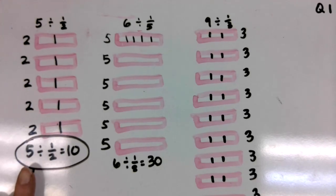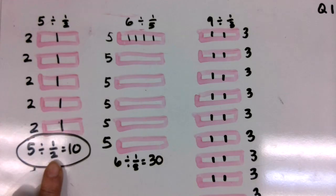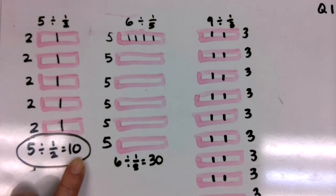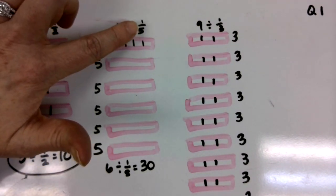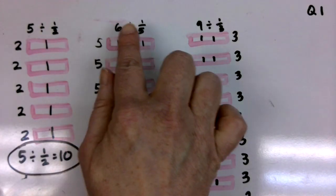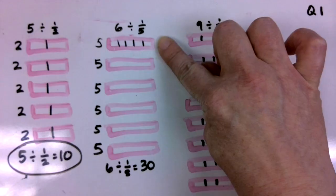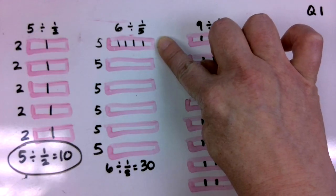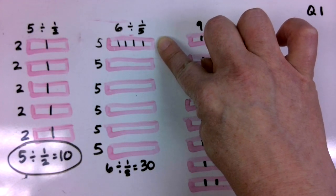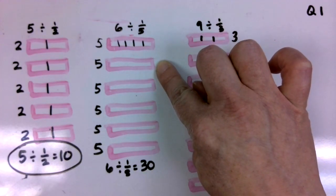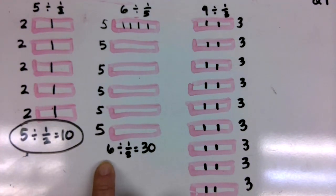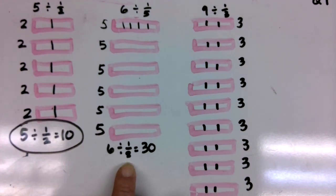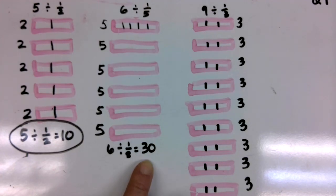So we know that our five chocolate bars, if they were broken into one-half portions, would give us 10 total portions. Boys and girls, we can use that same logic for breaking the six wholes into one-fifth pieces. If I break six wholes into one-fifth pieces, my first chocolate bar would give me five pieces because they're broken into one-fifth pieces. My second one would be five more pieces and five and five and five and in all six chocolate bars broken into one-fifth portions would give us 30 total portions.